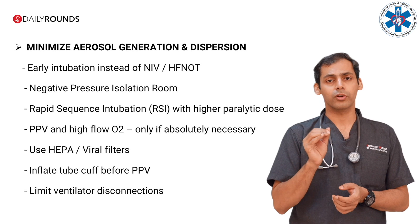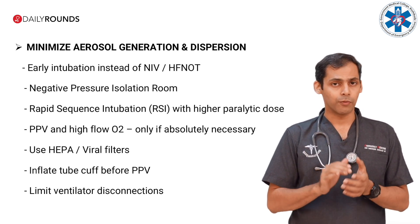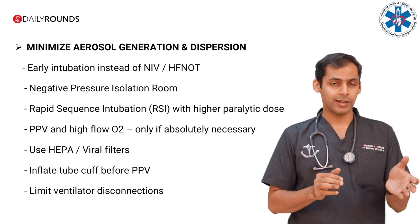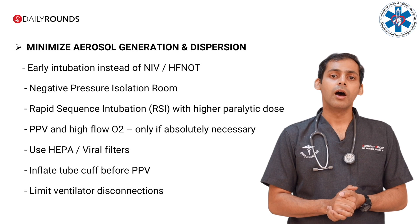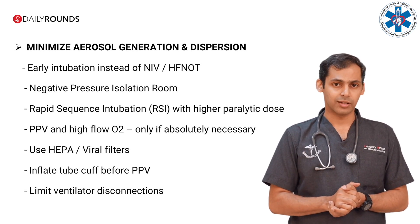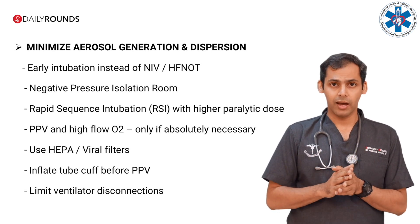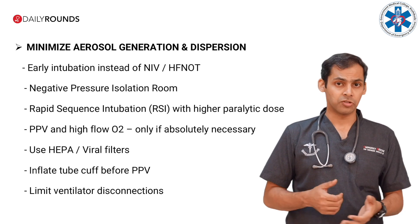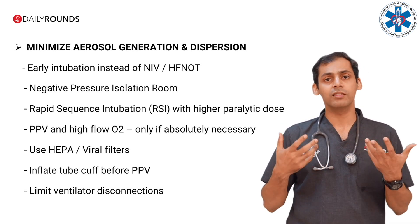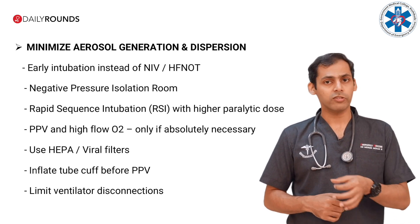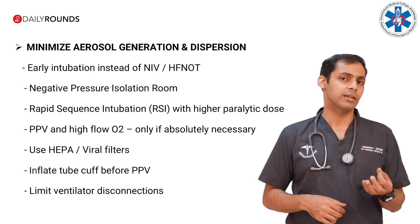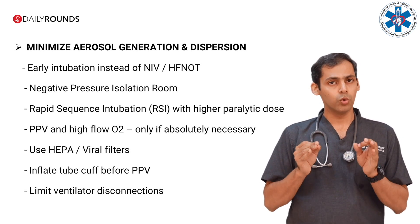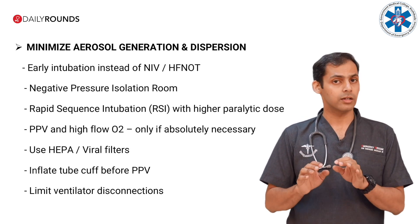The next important step is to minimize aerosol generation and dispersion. Early intubation is preferred over non-invasive ventilation or high-flow nasal oxygen; if those are used, make appropriate modifications. Intubate in a negative pressure room if available. Rapid sequence intubation with a higher dose of paralytic agent is the method of choice — it ensures apnea, since even exhaled air is contaminated with viral droplets, prevents cough during laryngoscopy, and relaxes airway muscles including the vocal cords. Positive pressure ventilation, high-flow oxygen, and manual bagging should be done only if clinically necessary. Always use viral filters. Inflate the tube cuff before positive pressure ventilation. Limit ventilator disconnections.